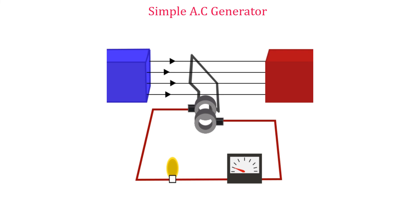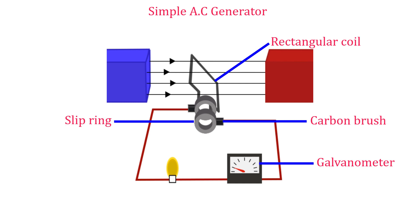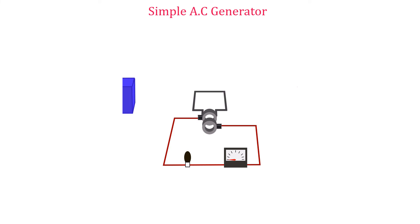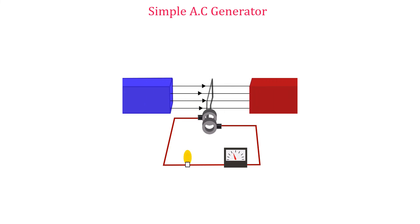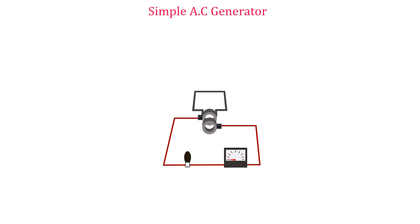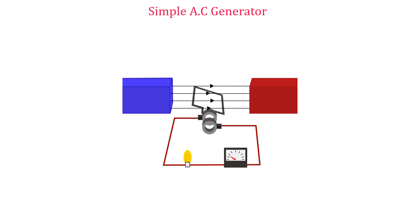A simple AC generator works using the principle of electromagnetic induction. It consists of a rectangular coil between the poles of a permanent magnet. The ends of the coil are joined to two slip rings, and carbon brushes press against them. The slip rings are fixed to the coil and rotate with it, while the brushes keep the coil connected to the outside circuit. When the coil is rotated, it cuts magnetic field lines, so an EMF is generated — a force is applied to the coil to cause rotation, and because field lines are cut, current flows.